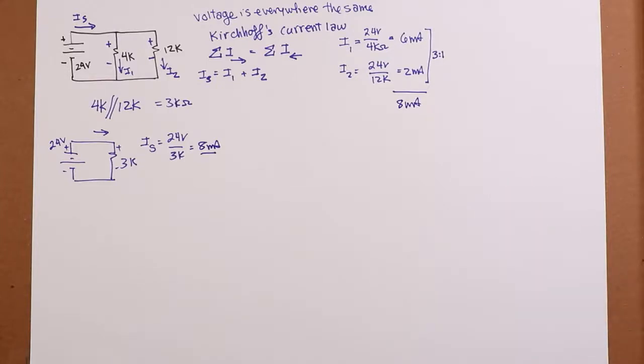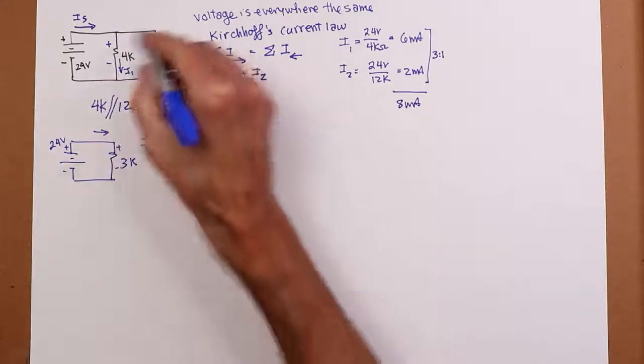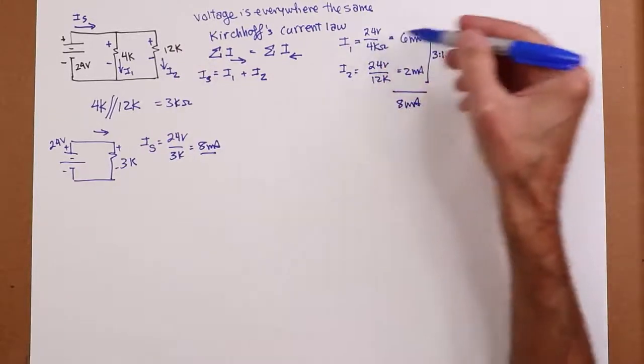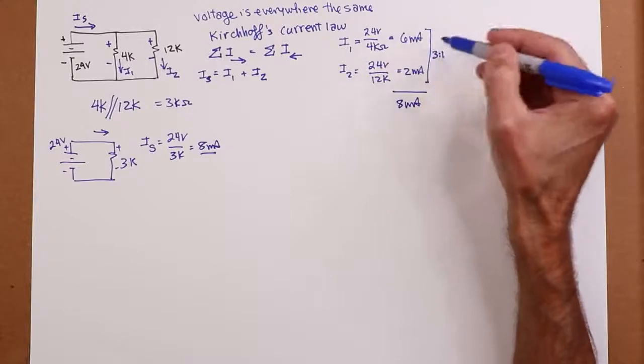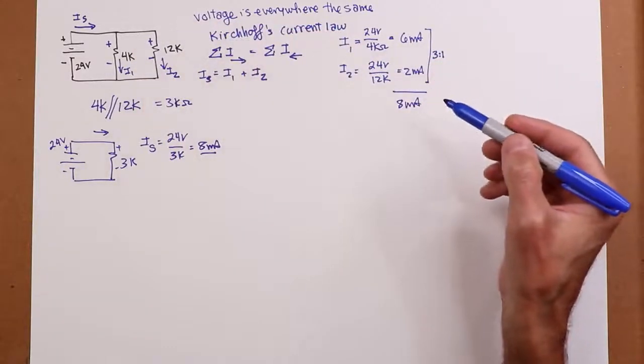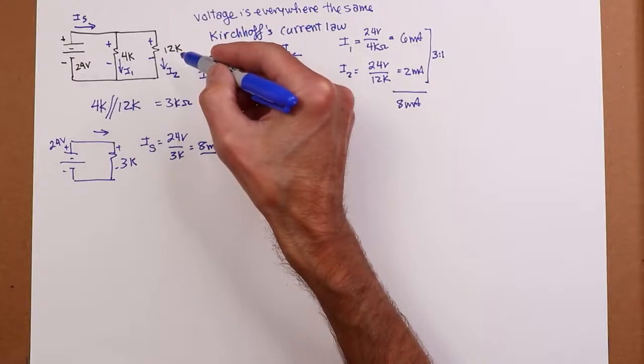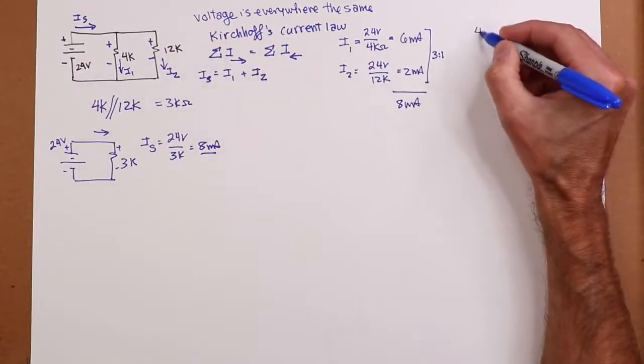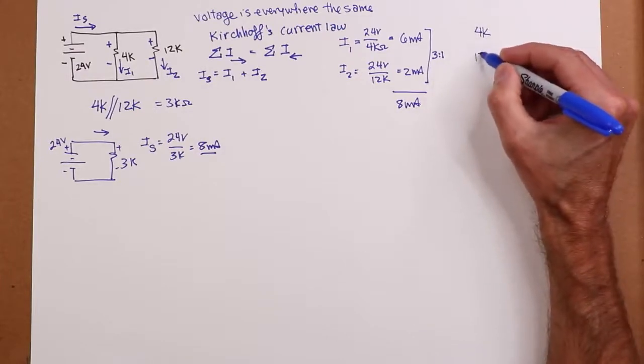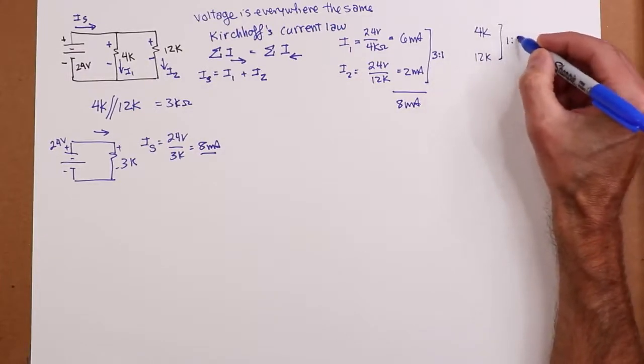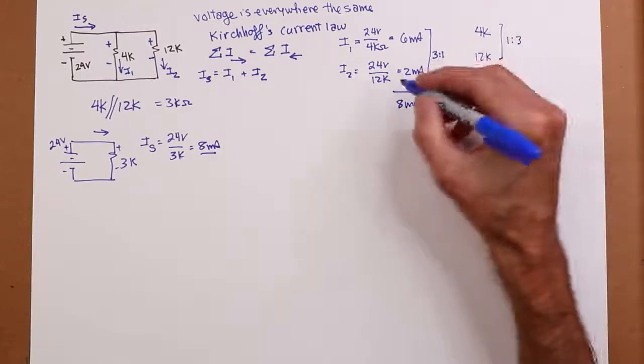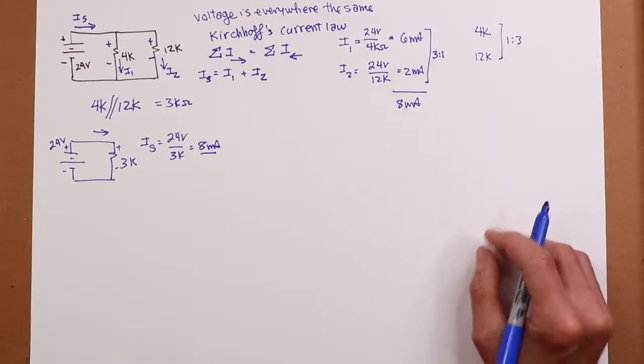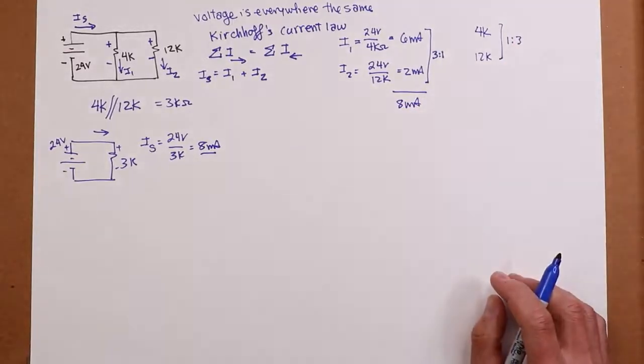The other thing we can do here, notice the ratio of the resistance. So the ratio of the currents, I1 to I2, is 3 to 1. The ratio of the resistances, R1 to R2, is 4k to 12k, in other words, 1 to 3. So 4k versus 12k is 1 to 3. So the resistance and the currents, they divide up in inverse relation. Something useful to remember.